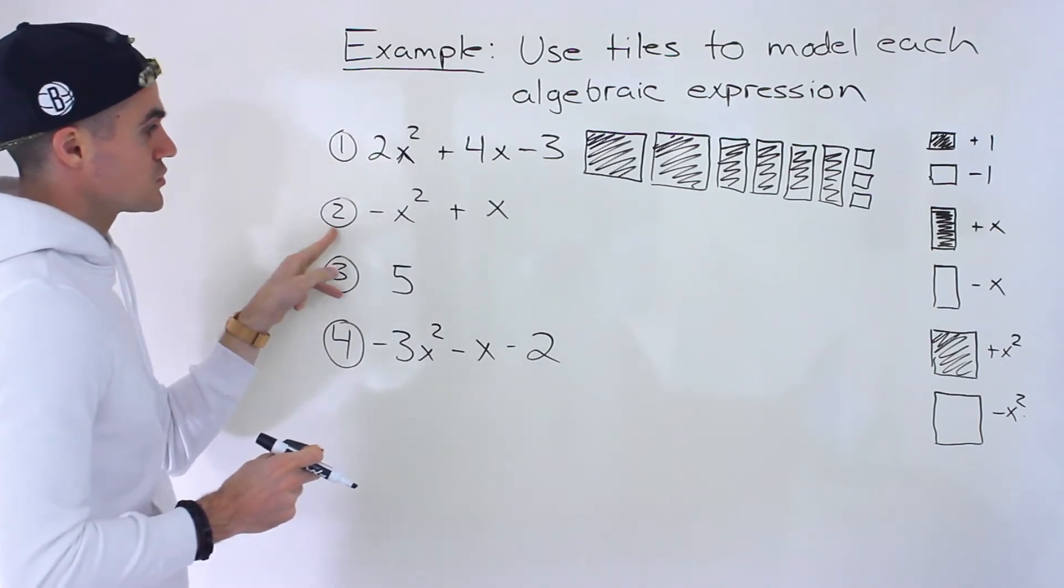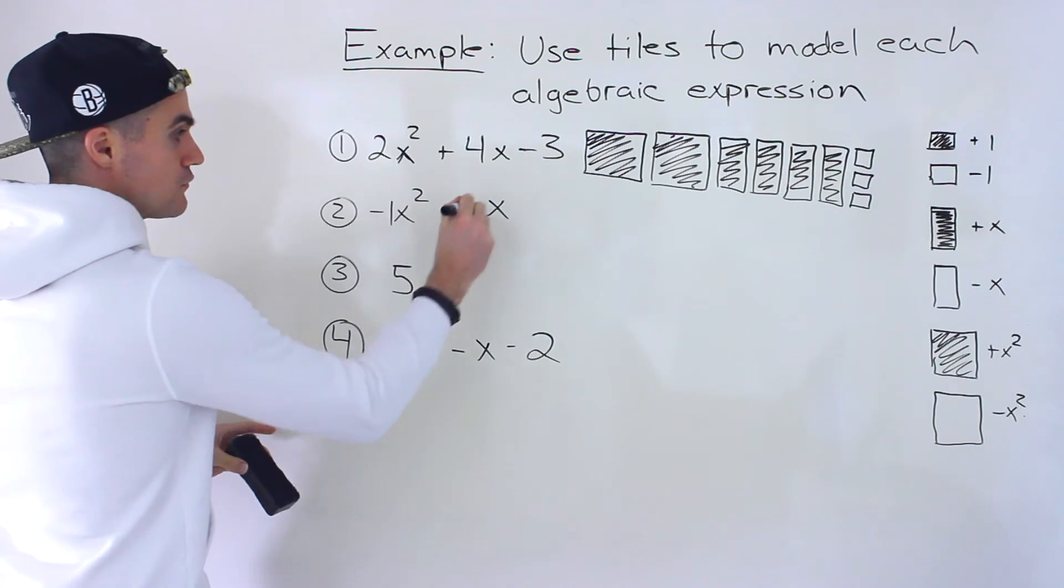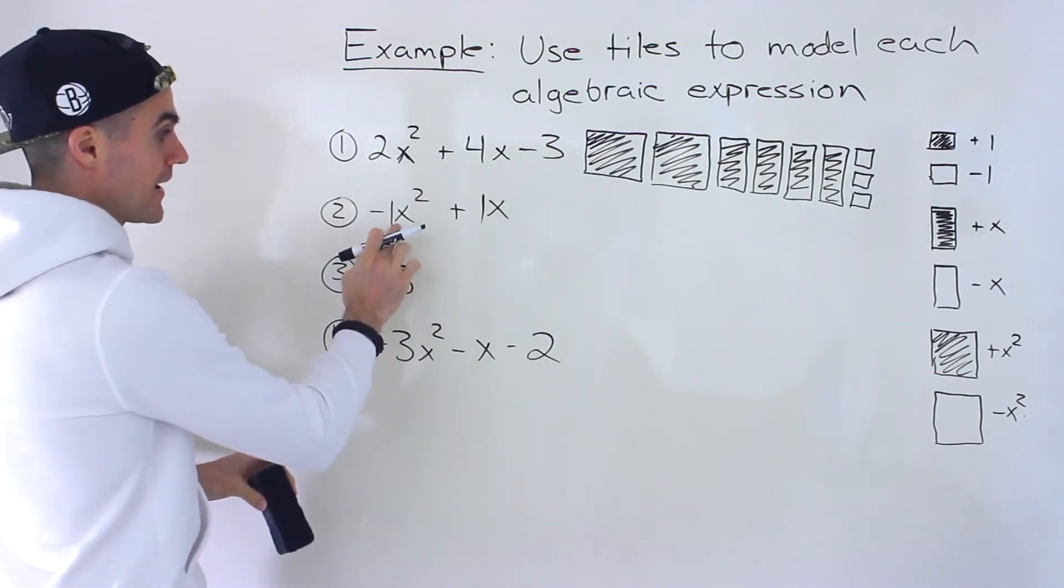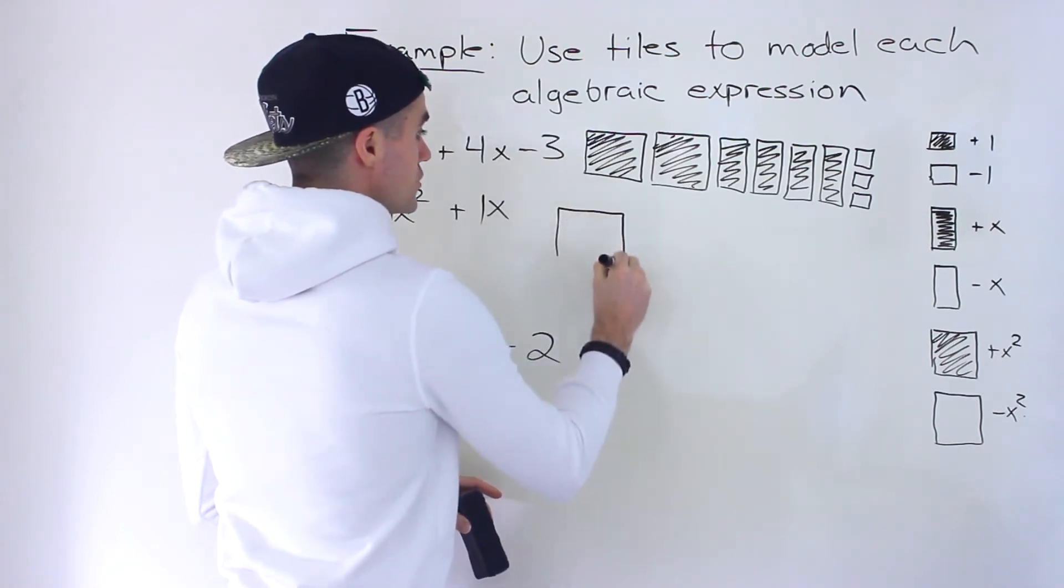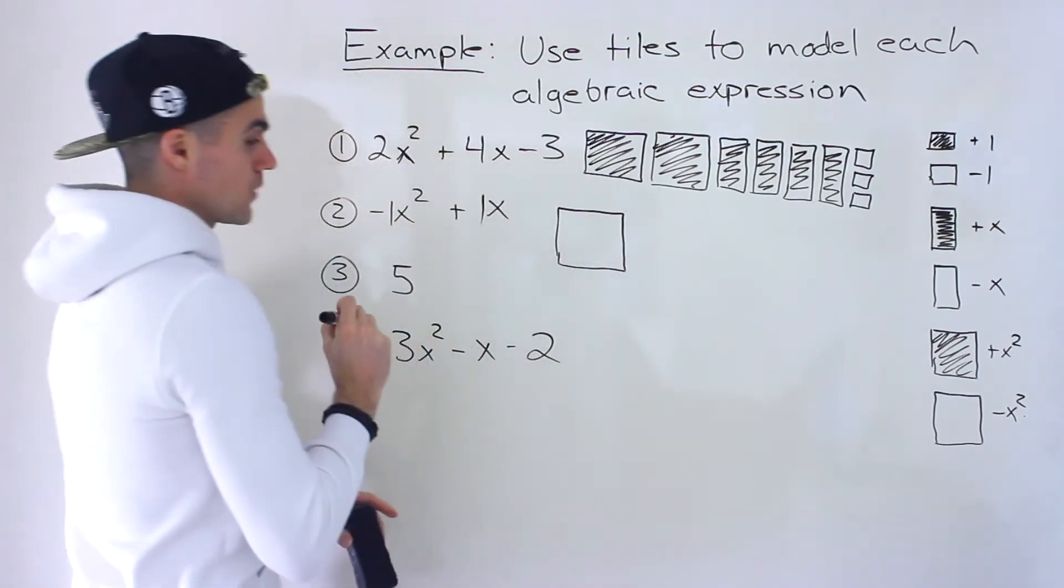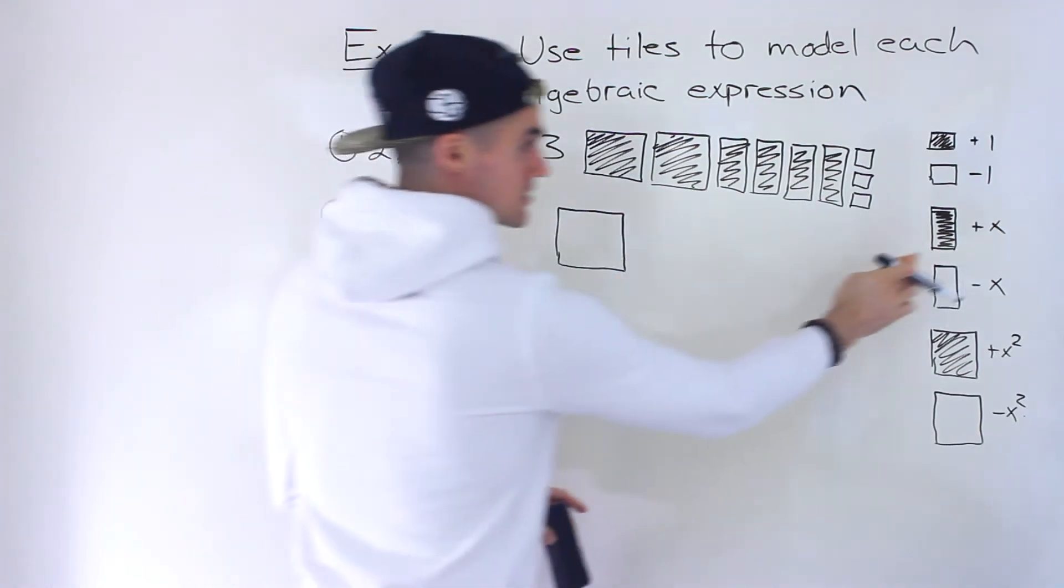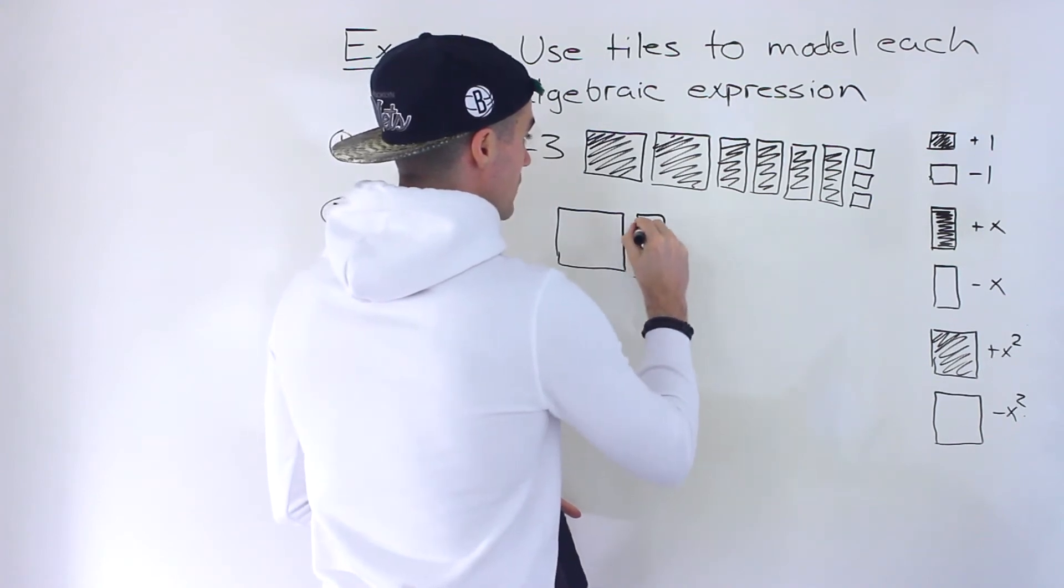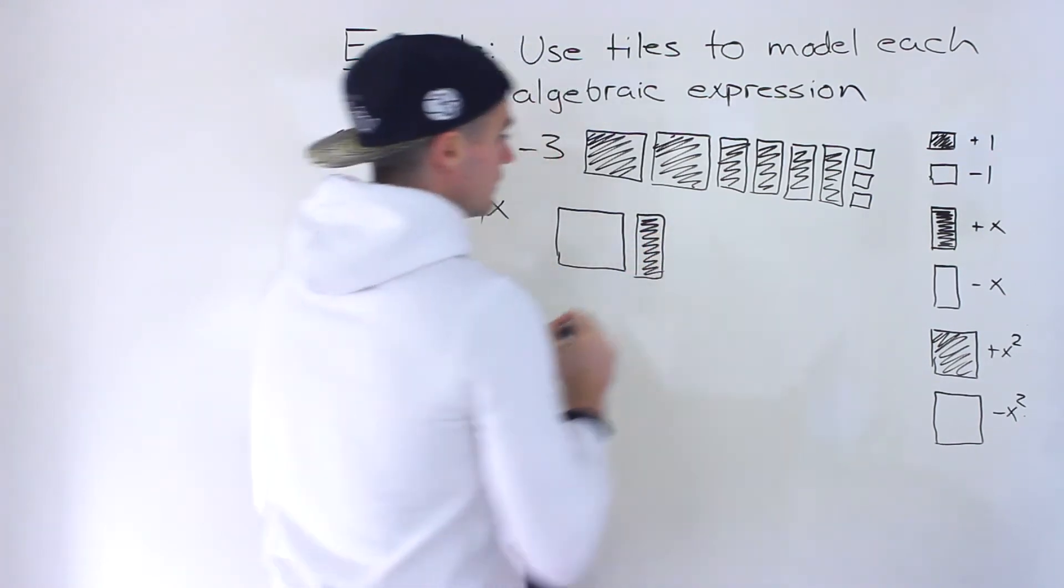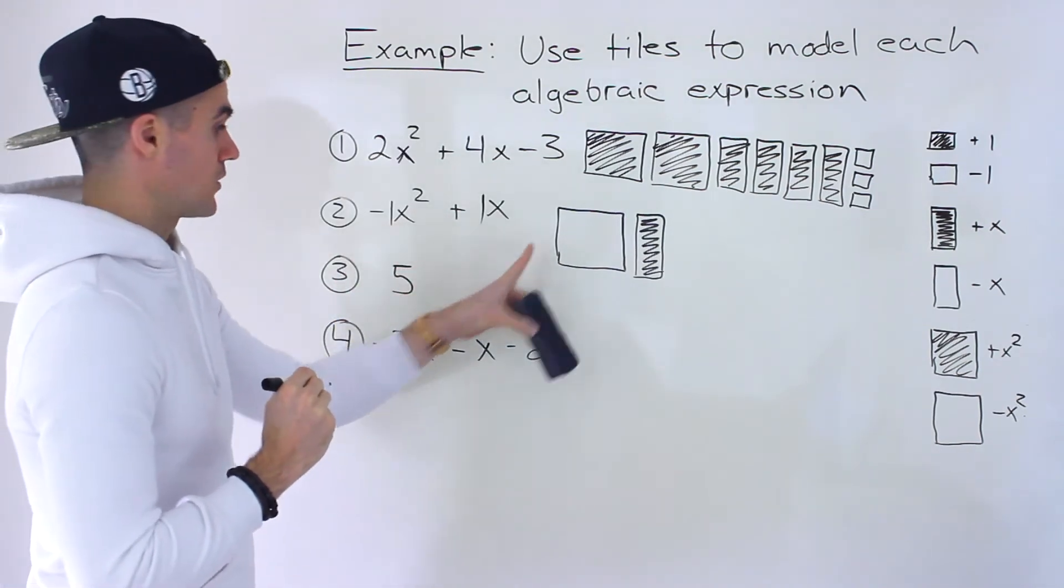Let's go to the next one. So number 2, we have minus x squared plus x. There's like a minus 1 in front and a plus 1 in front. So minus x squared - that's the same as this. So we have 1 large hollow square. And then we have plus x, plus 1x, which would be one of these rectangles. Because it's positive, it would be filled in like that. So this algebraic expression is modeled like that.